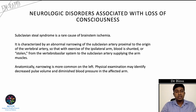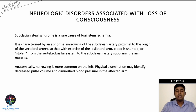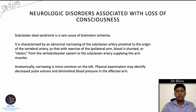Subclavian steal syndrome is a rare cause of brainstem ischemia, characterized by abnormal narrowing of the subclavian artery proximal to the origin of the vertebral artery. When the patient exercises the ipsilateral arm, blood is shunted from the vertebrobasilar system to the subclavian artery supplying the arm muscles, causing brainstem ischemia due to decreased cerebral perfusion. The narrowing is more common on the left side, and physical examination may identify decreased pulse volume and diminished blood pressure in the affected arm.